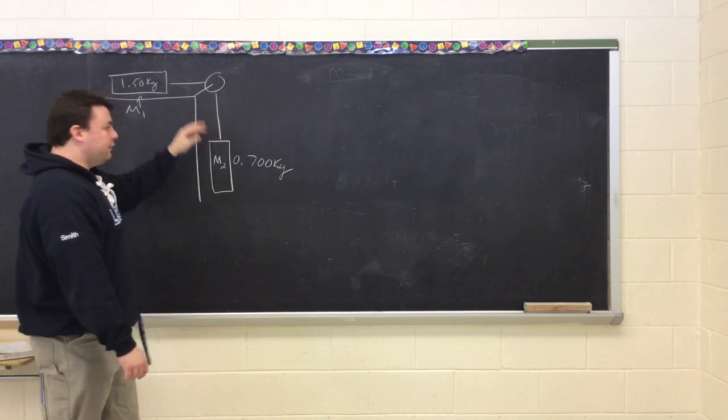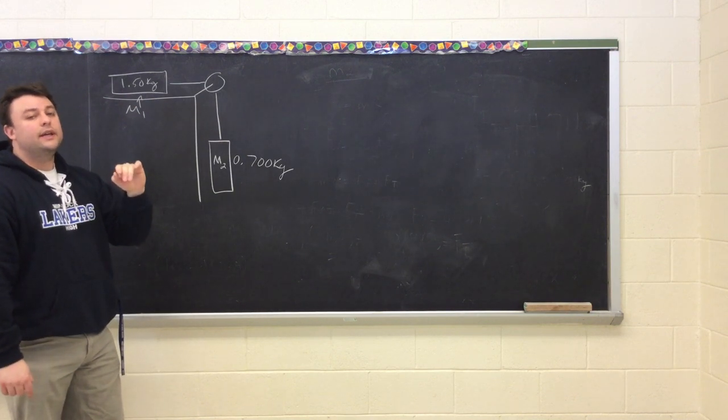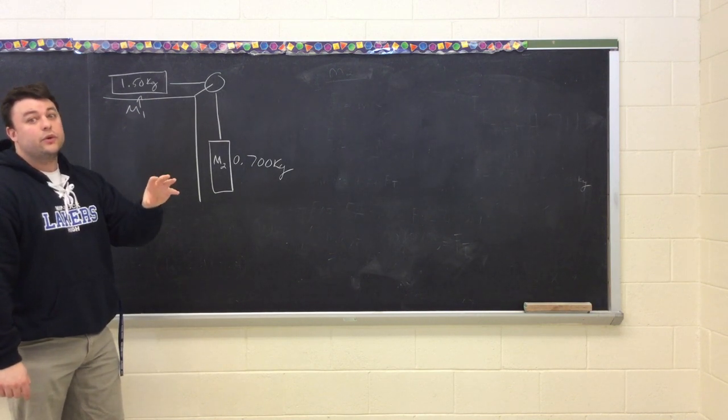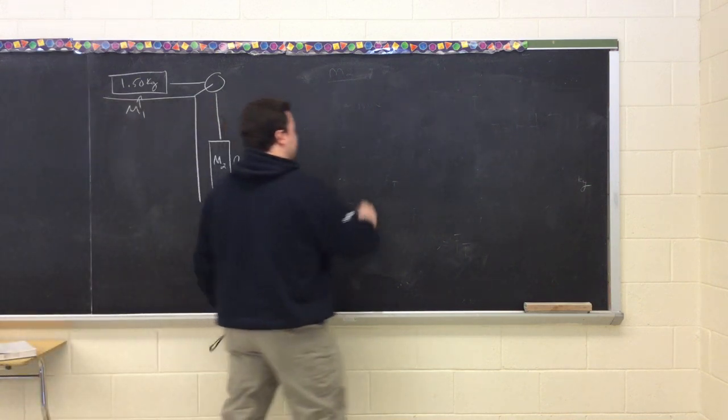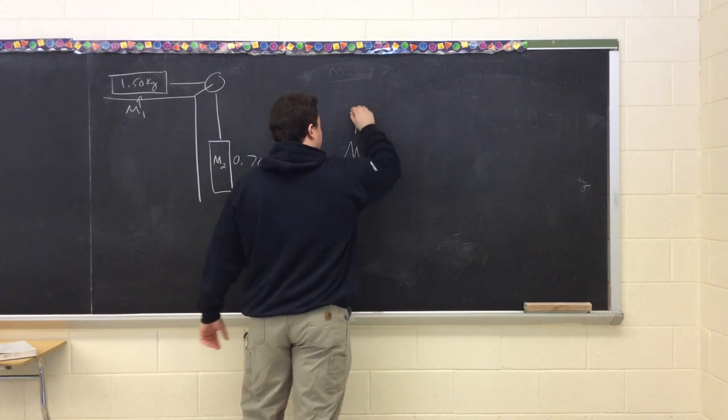We need to make free body diagrams of each mass to determine exactly what the force tension is going to equal. If we look at mass 1, we have a force normal and a force gravity in opposite directions.